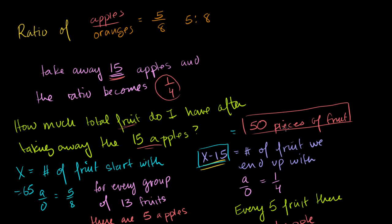And we figured it out. We figured out that it's 50 pieces of fruit. But let's see if we can do it a different way. The last time I kind of talked through it and used a lot of words, let's see if we can do it a little bit more algebraically.